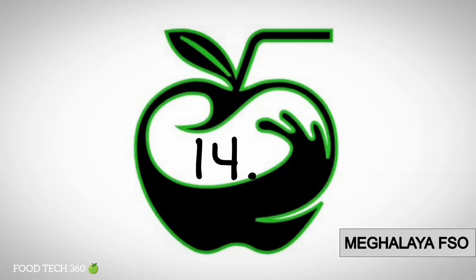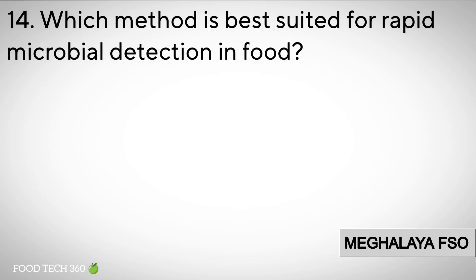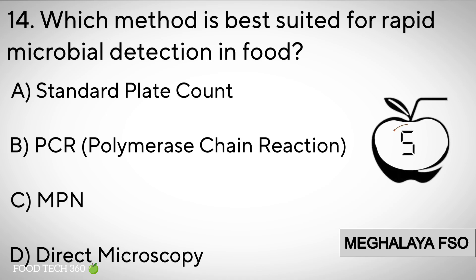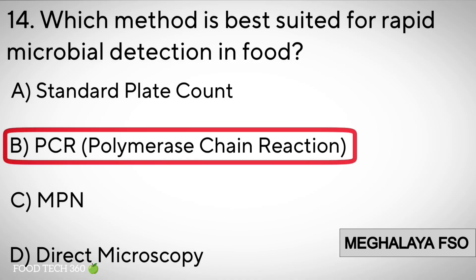Question number 14: Which method is best suited for rapid microbial detection in food? Options: A. Standard plate count. B. PCR. C. MPN. D. Direct microscopy. Correct answer: B. PCR — Polymerase Chain Reaction.